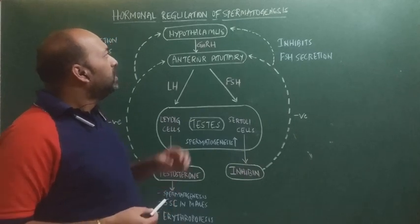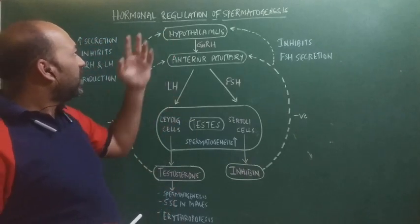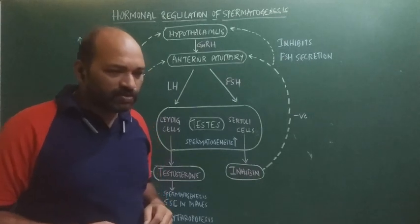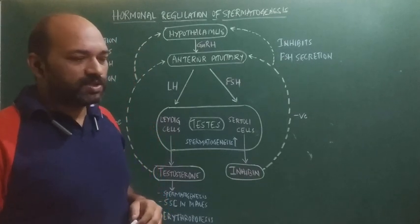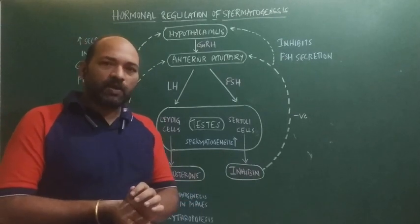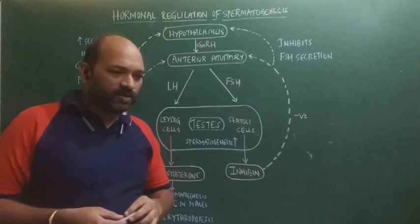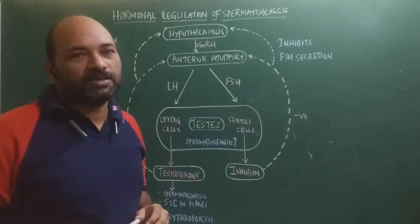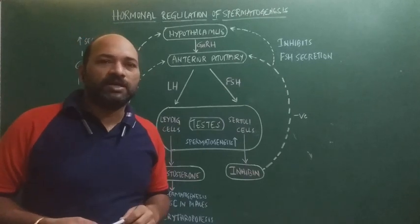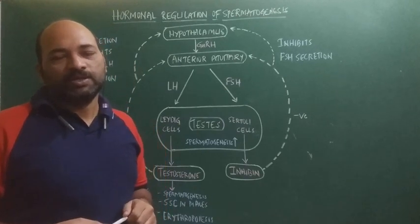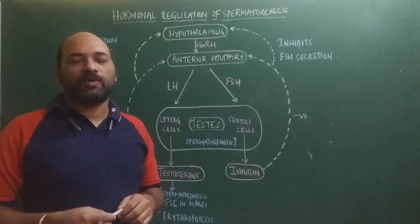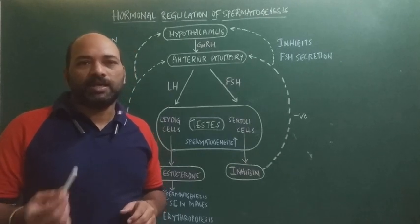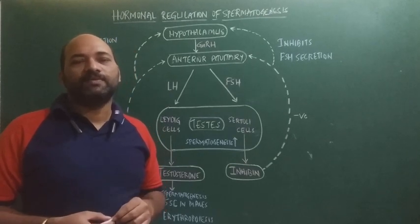Let's get into the topic: hormonal regulation of spermatogenesis. Spermatogenesis is the process of formation of the haploid male gamete from the diploid reproductive cell — that is spermatogonia — in the testis. The entire process of spermatogenesis occurs in the seminiferous tubules of the testis.